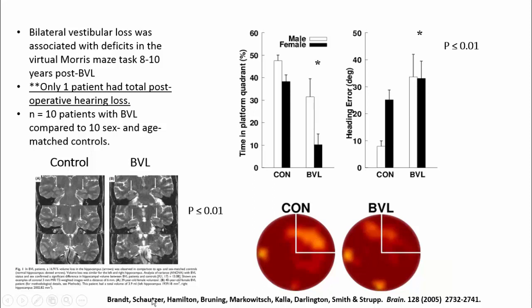In this same study, we did MRI on their brains and found that these people with bilateral vestibular loss had about a 17% decrease in the volume of the bilateral hippocampi. This was controlled for differences in brain volume, and it was just the hippocampus that was atrophied. This was the first evidence that the hippocampus atrophies in people with bilateral vestibular loss.